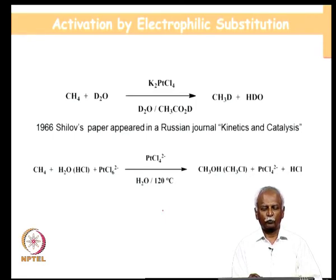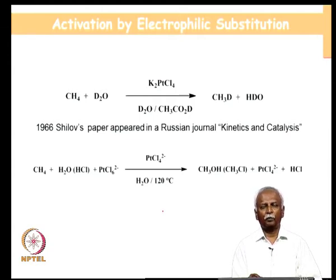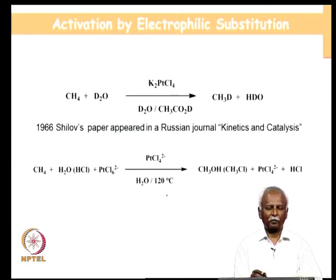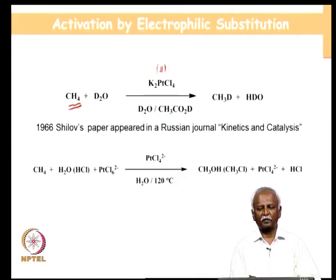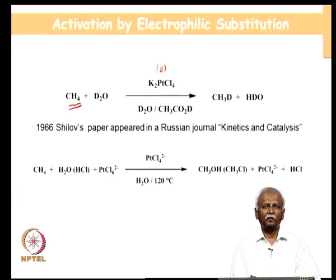Let us take up electrophilic substitution. It is interesting to know that as early as 1966, Shilov in Russia published a paper in a Russian journal, which made it reasonably inaccessible to most chemists. Because at that time Russia was behind the iron curtain, it was not obvious to many that this very interesting paper on the direct activation of methane had been accomplished. That was accomplished by a simple platinum catalyst — platinum in the platinum 2 oxidation state — and it was an exchange of hydrogen for deuterium. This paper triggered a lot of attention later on when it became accessible to many people in the west.